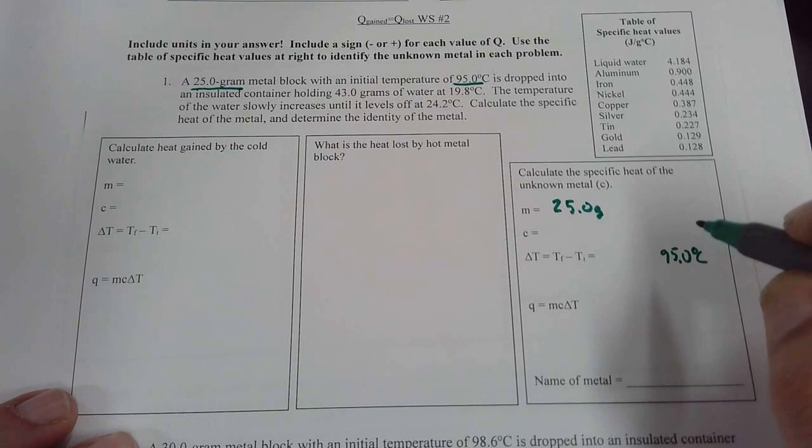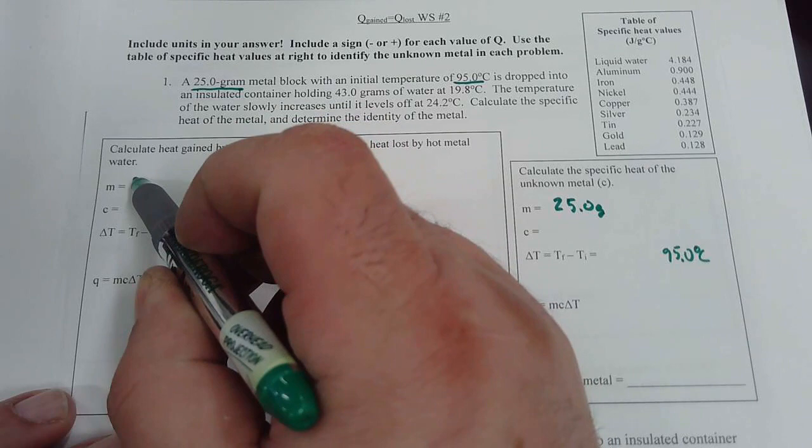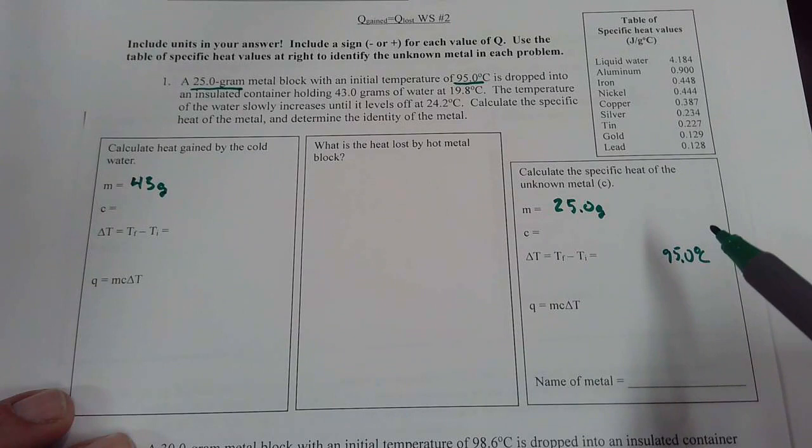This is dropped into an insulated container or calorimeter that's holding 43 grams of water. So our mass of the water is 43 grams and its initial temperature is 19.8.